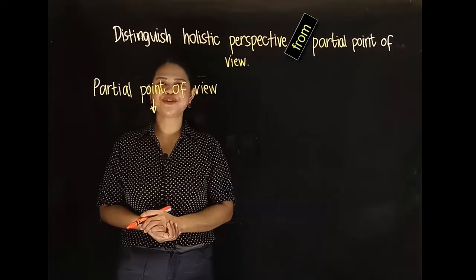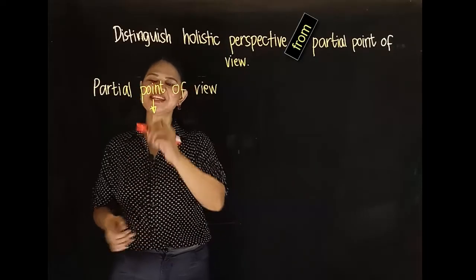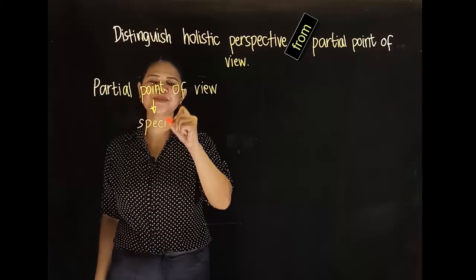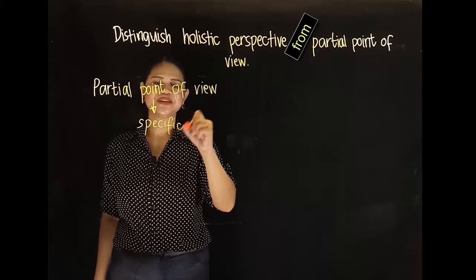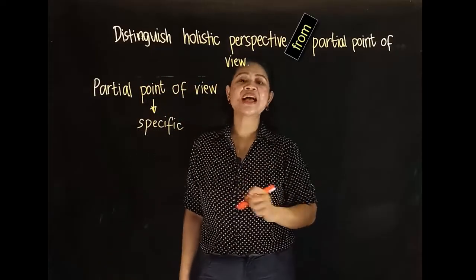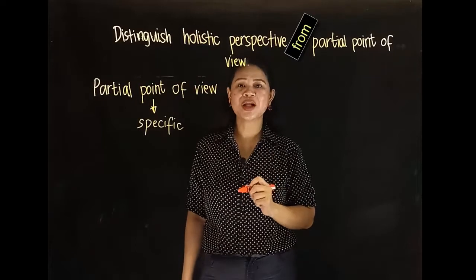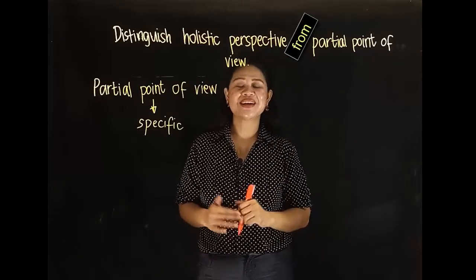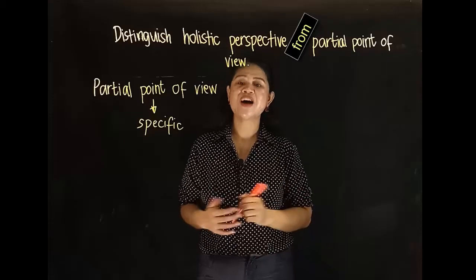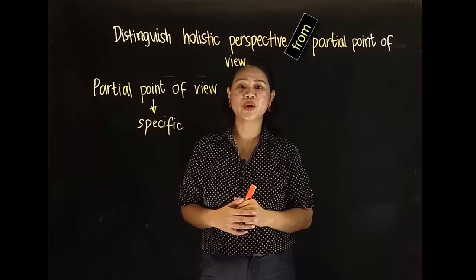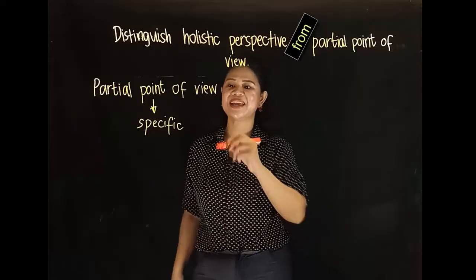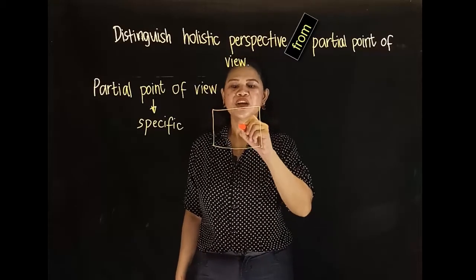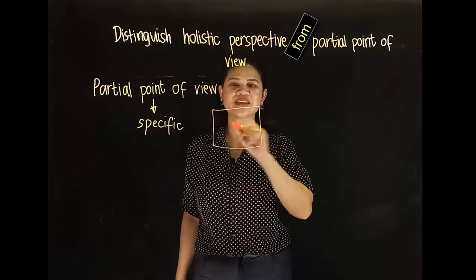Partial point of view focuses on the specific aspects of the problem. The individual just focuses attention on a specific area or aspect of the problem in order to understand it. It's like when you are viewing this image, you're just looking at the dot.